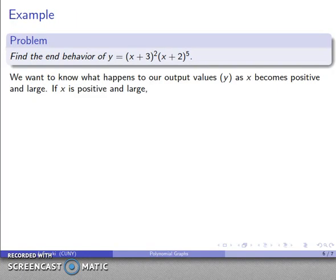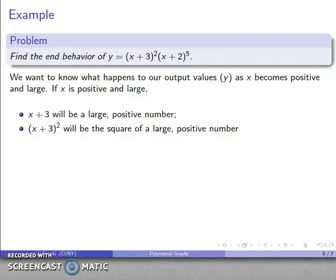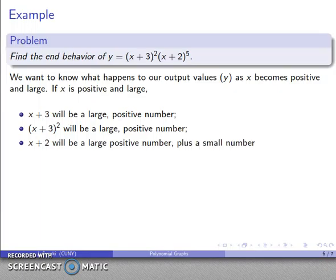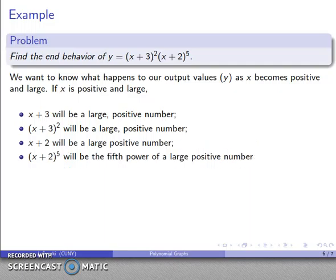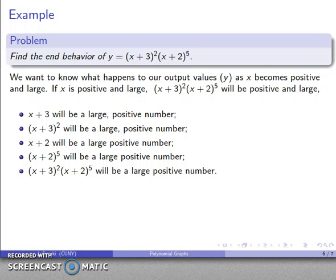As x gets positive and large: (x+3) is a large positive number, so (x+3)² is also a large positive number. Similarly, (x+2) is a large positive number, so (x+2)⁵ is a large positive number. The product of two large positive numbers is a large positive number. So as x goes to +∞, this product — and therefore y — becomes large and positive.